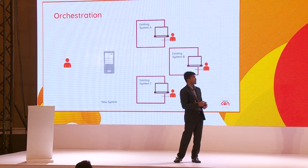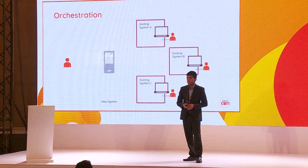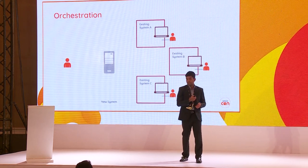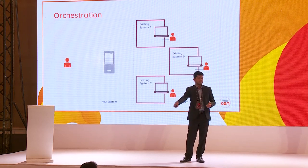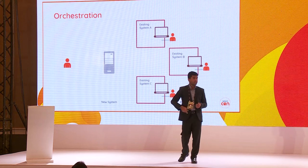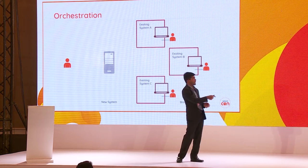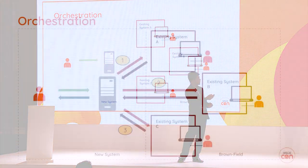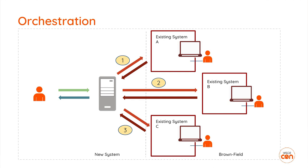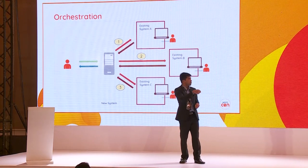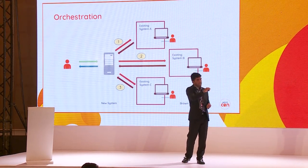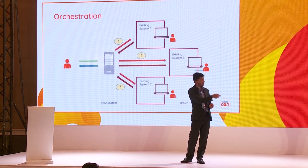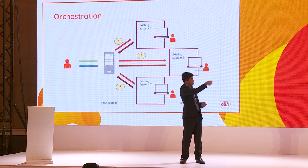The third requirement is service orchestration. Orchestration is like going to get a driving license — you go to one counter, take something, then go to the next counter. In the enterprise, there could be system A, system B, system C, which you need to call in order: call system A, take the response, then call system B, process the response, then call system C, and finally respond to the client. The new system doesn't want to handle that complexity, so we need something in the middle that does the orchestration for us.